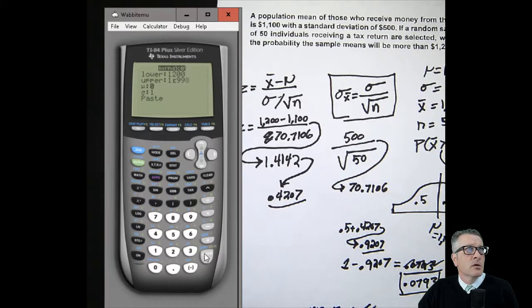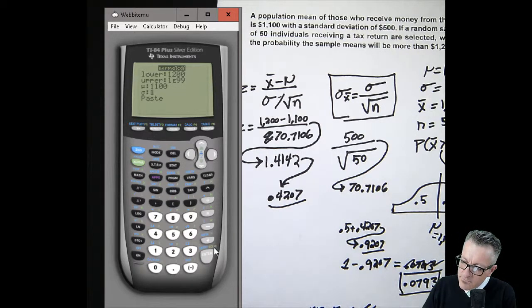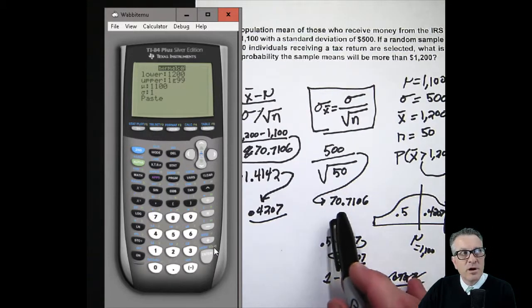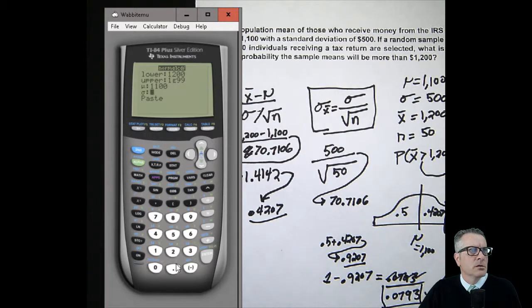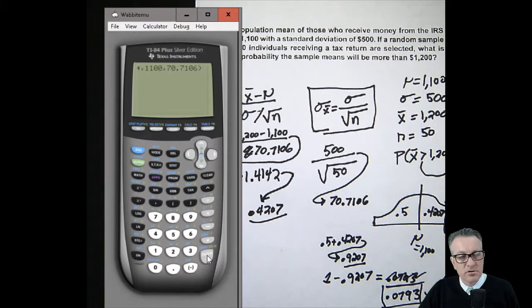Our μ is 1100, and our standard deviation is the standard deviation we calculated - make sure you don't put in the population standard deviation. You have to put in this value, otherwise it's not going to be right. We can actually put in the formula right here, but we already have it calculated, so put in 70.7106. If you're using an older calculator, you might not have that nice wizard interface and you have to put in the values in parentheses with commas.